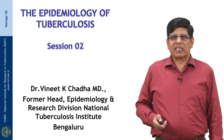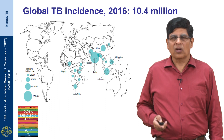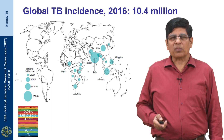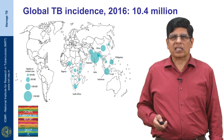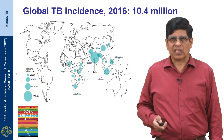Let us look at the present disease burden globally and in India. In the year 2016, there were an estimated 10.4 million incident cases all over the world. Of them, about 2.8 million occurred in India alone, making it the highest TB burden country in terms of absolute number of incident cases.